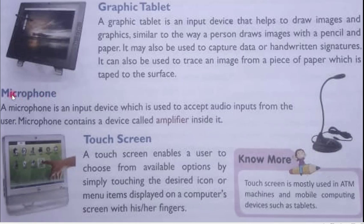Next is the microphone — known in short as mic, the same one we use in our school assembly. A microphone is an input device used to accept audio inputs from the user. The microphone contains a device called an amplifier inside it. This amplifier is responsible for converting your analog voice into digital voice. Whatever we speak normally is called analog voice, but as it enters the microphone, it is converted into digital voice by the amplifier.